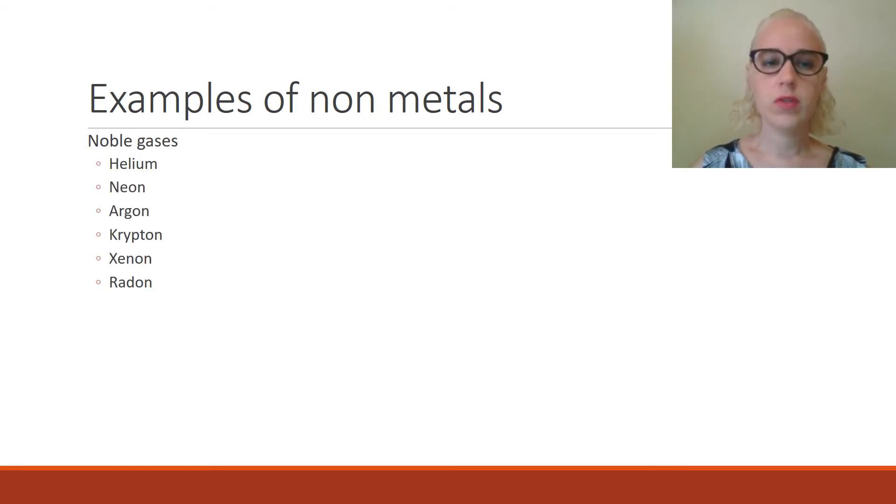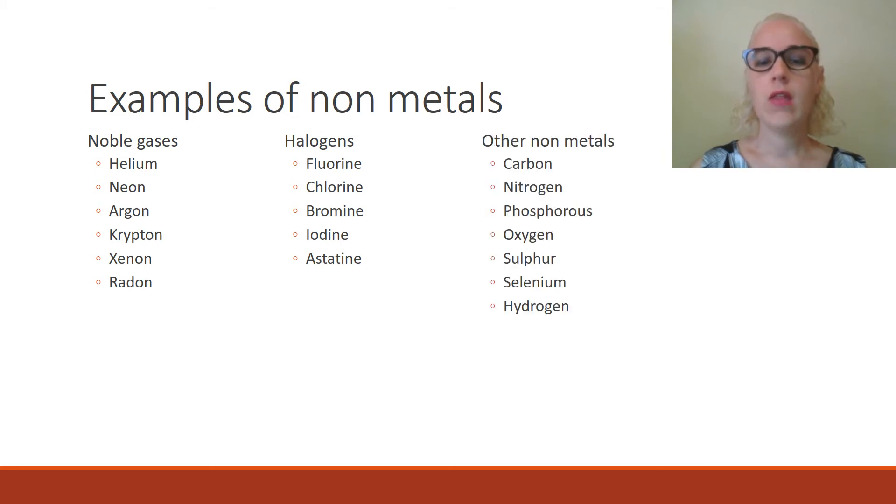Examples of non-metals. Non-metals include the noble gases, which is helium, neon, argon, krypton, xenon, and radon. They also include the halogens, which is fluorine, chlorine, bromine, iodine, and astatine. And they also include other non-metals, which is carbon, nitrogen, phosphorus, oxygen, sulfur, selenium, and hydrogen.